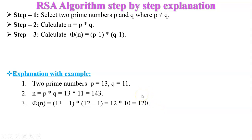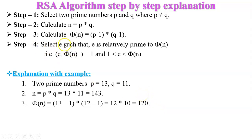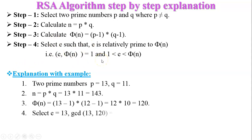Step number four: select e such that e is relatively prime to φ(n). The condition is 1 less than e less than φ(n), and gcd(e, φ(n)) must equal 1. I select e equal to 13. gcd(13, 120) equals 1, so e is our public key.